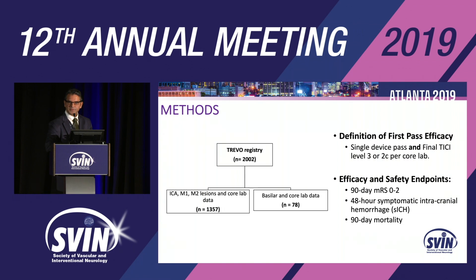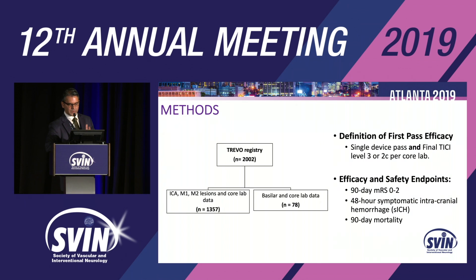As a reminder, the Trevo Registry was a prospective, single-arm registry looking at the Trevo device in patients treated 0 to 24 hours in both anterior and posterior circulation. The study enrolled ICA and basilar lesions, and we analyzed cases where we had data on number of passes and recanalization status. We had 1,357 patients in the anterior circulation and 78 in the posterior circulation.